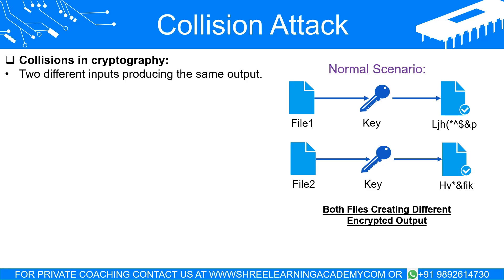Defining collisions. In its simplest terms, a collision in cryptography occurs when two different inputs produce the same output. Imagine two distinct keys unlocking the same lock — this is what a collision looks like in the cryptographic world. These collisions can occur in different contexts, namely encryption and hashing, which we will explore separately in the upcoming sections.